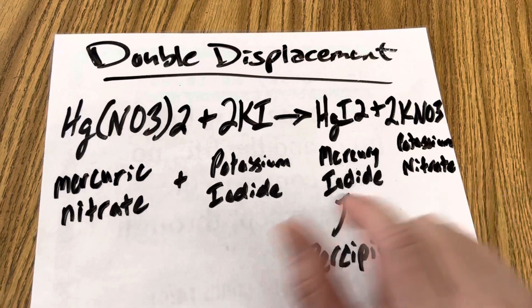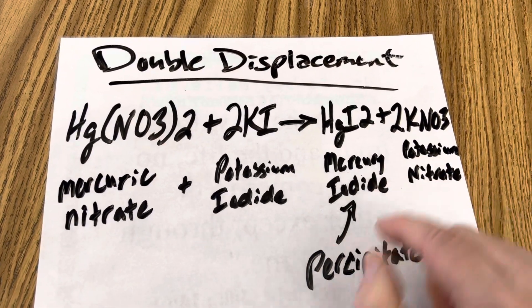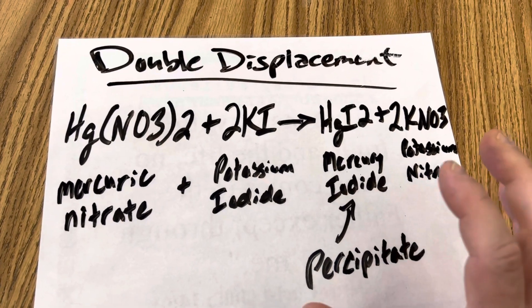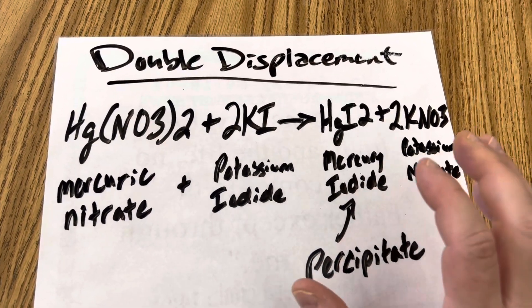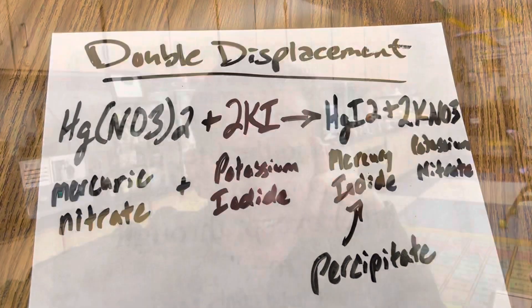So these are our reactants. These are our products. So the mercuric nitrate traded places and became mercury iodide. That's the bright orange reddish precipitant that's insoluble that you saw. And the potassium iodide becomes potassium nitrate. Well I hope you enjoyed today's edition of Ramseyland and I'll see you next time.